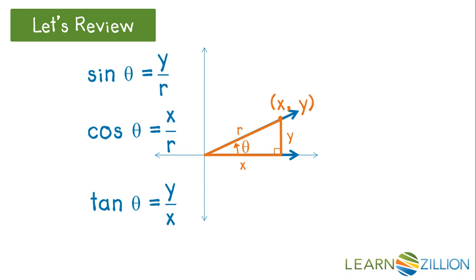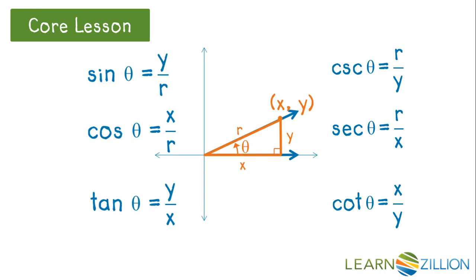What you may not know is that the reciprocals of each of these functions are also trig functions. The reciprocal of sine is cosecant, it's r over y. The reciprocal of cosine is secant, r over x. And the reciprocal of tangent is cotangent, x over y.